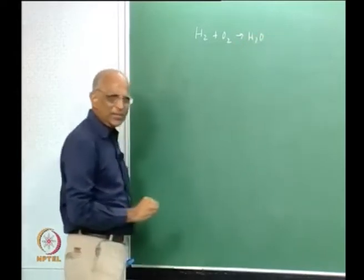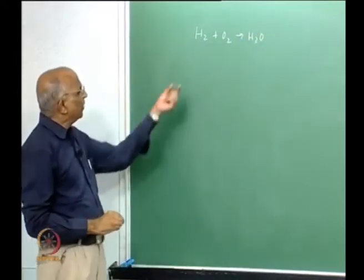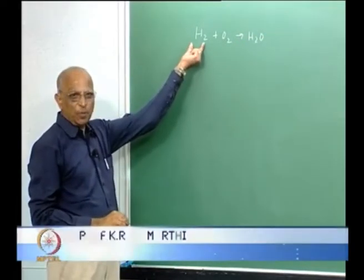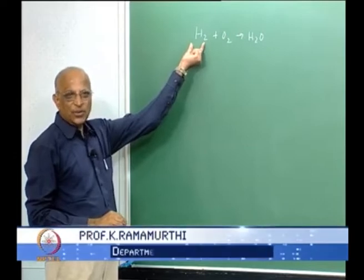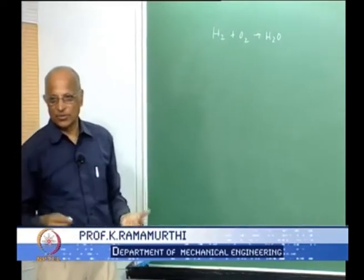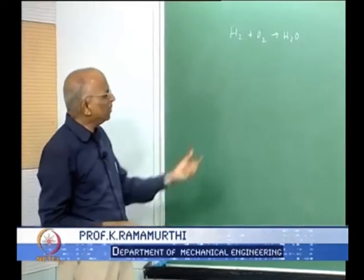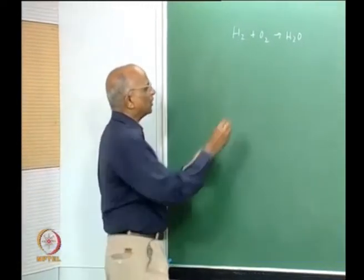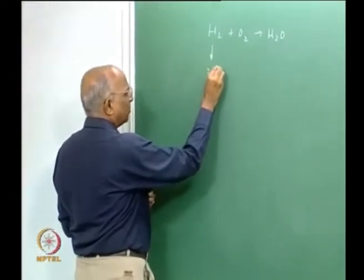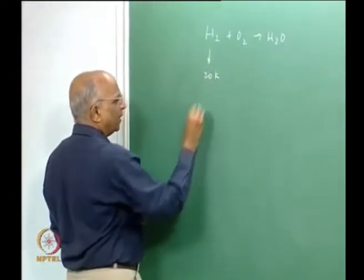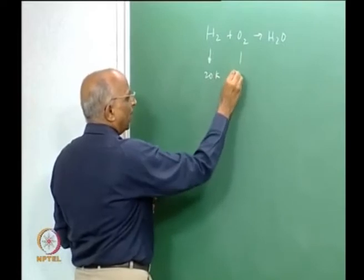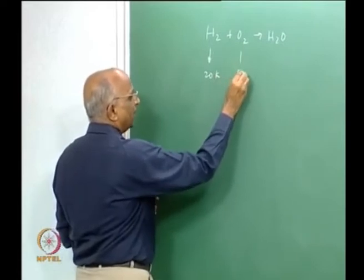When we use hydrogen as a propellant, it is not as a gas; it is at a very low temperature. Similarly, oxygen is at a low temperature. We use hydrogen at a temperature of 20 K if it is to be a liquid, and oxygen at around 80 K.